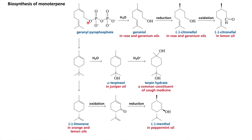These are all monoterpenes because they contain 10 carbons. Another pathway: when the two phosphate groups are removed, a positive charge forms and cyclization occurs between two carbons. Water reacts to give alpha-terpineol, the major component of juniper oil. Water reacting at another position gives terpene hydrate, which is a common constituent of cough medicine.